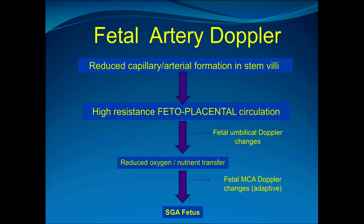To recap the pathophysiology: a reduced capillary artery formation starts in the stem villous. There is insufficient remodelling of the spiral arteries within the placenta, stopping it from forming a low-resistance bed and instead forming a high-resistance bed. This can occur very early in pregnancy. You then get high resistance to fetal-placental circulation, at which point you see fetal umbilical Doppler changes. This reduces oxygen and nutrient transfer, and the fetal adaptive response — seen by sampling the fetal middle cerebral artery Doppler — is to start shunting blood flow up to the head.